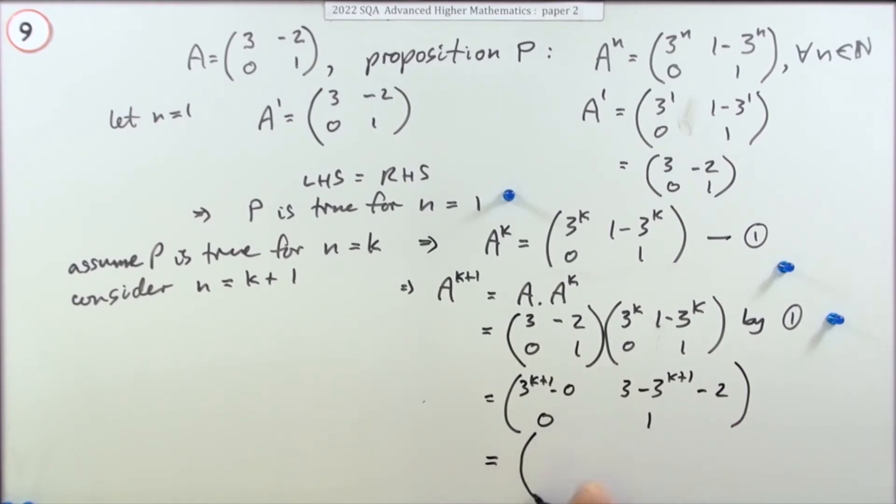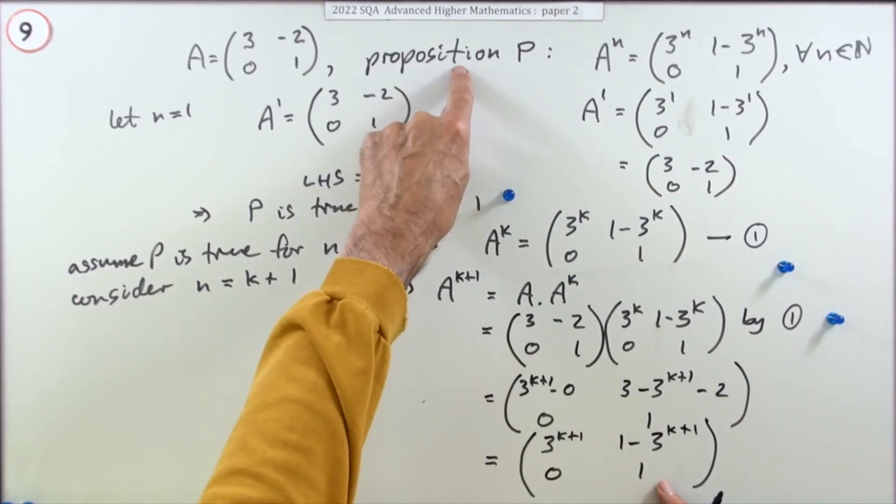I've got 3^(k+1) here. You've got the 3 take away 2 is 1 minus 3^(k+1). There's 0, there's 1. And what you've got now is the required result for k plus 1 if that proposition is true.